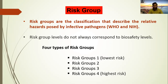Risk group levels do not always correspond to biosafety levels. It means that risk group level 1 microorganisms are not mandated to be handled in biosafety level 1. According to NIH, HIV — human immunodeficiency virus — is a risk group 3 microorganism, but when we work on HIV in the laboratory for research purposes, we can work on it in biosafety level 2. So the biosafety levels and the risk group levels are not corresponding to each other.